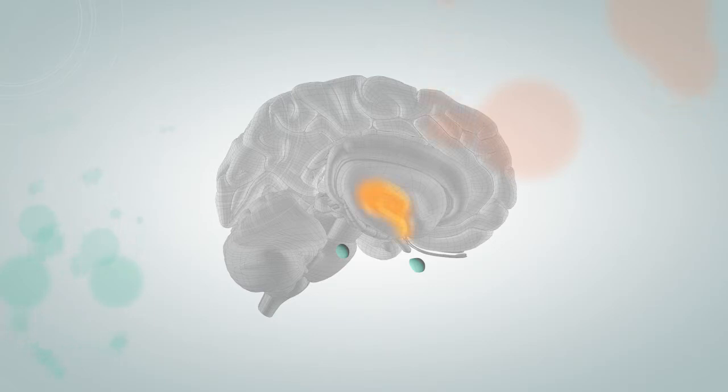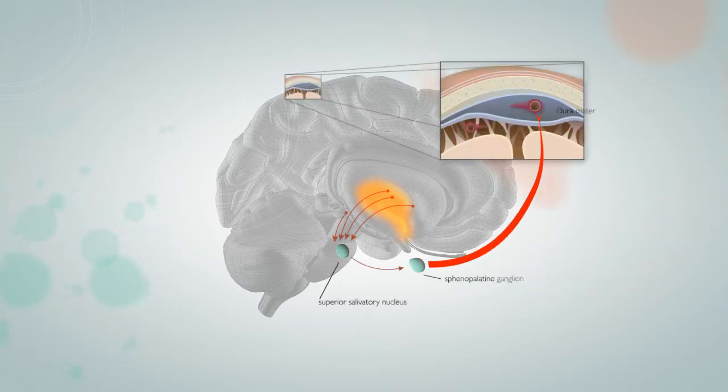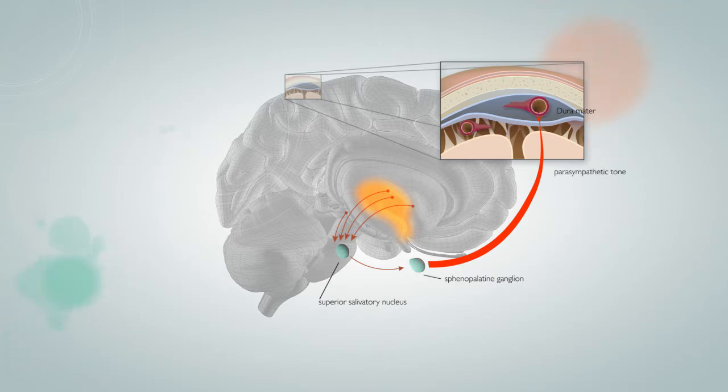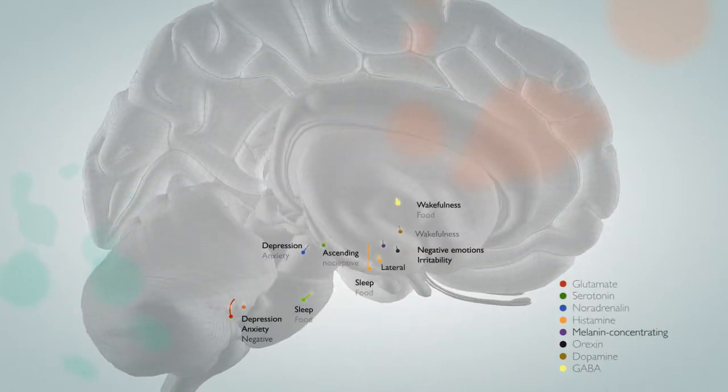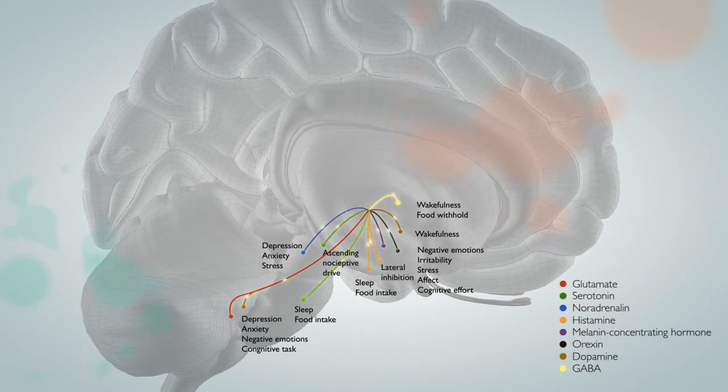One hypothesis is that, in response to changes in physiological and emotional homeostasis, hypothalamic neurons activate nociceptive pathways and the trigeminovascular pathway through increased parasympathetic tone. Another theory is that due to low cyclical brainstem activity, the threshold for hypothalamic and brainstem neurons to transmit nociceptive trigeminovascular signals is lowered.